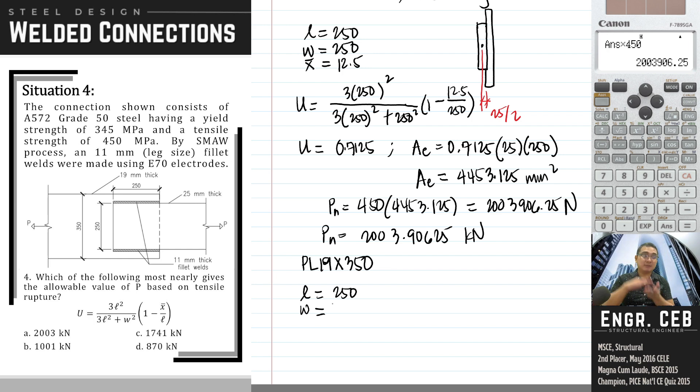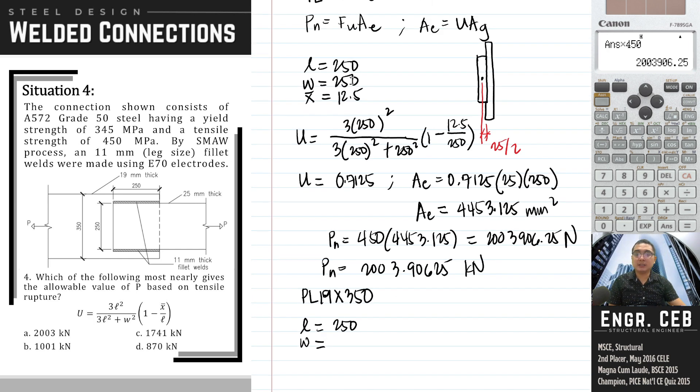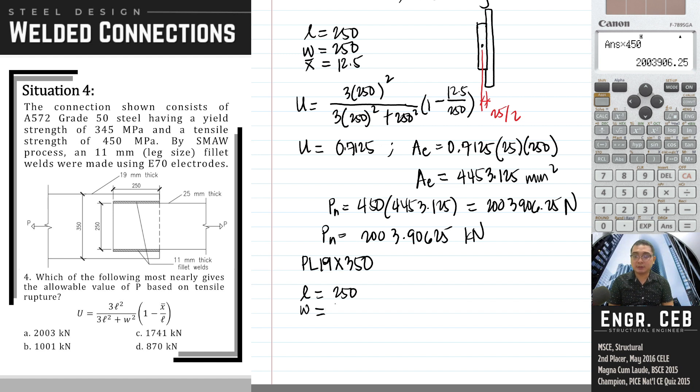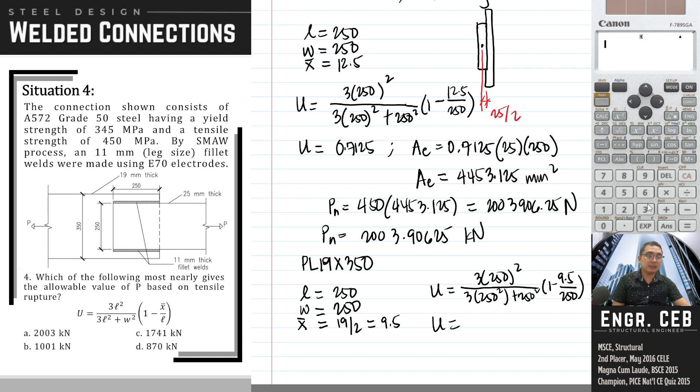Considering the other plate, W is still 250. But X-bar will be different because its thickness is 19, so it becomes 19 over 2, which is 9.5. Solving for the shear lag factor: U equals 350 squared divided by 3 times 250 squared plus 250 squared, times 1 minus 9.5 over 250. The shear lag factor for PL 19 by 350 is 0.7215.